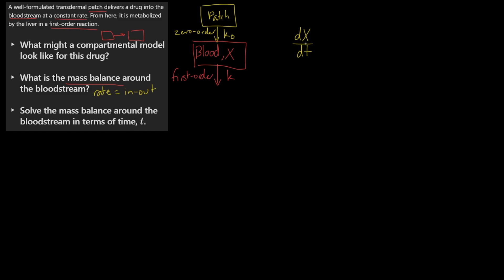That's equal to the in minus the out. So going into the bloodstream we have k₀, and going out we have k. And remember, we have k times X. So you always multiply these rate constants when they're first-order by the box that they come from.